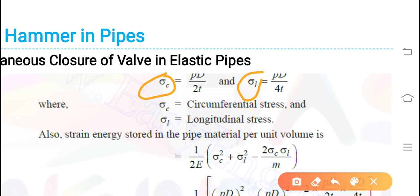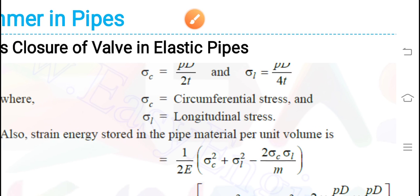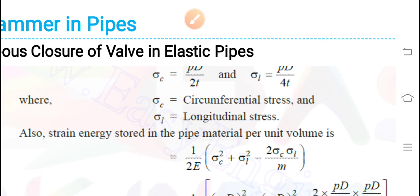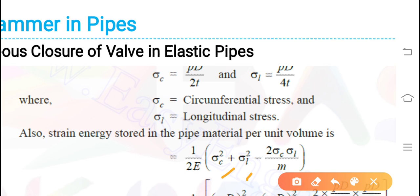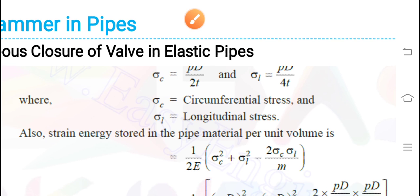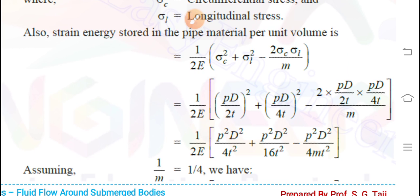The strain energy stored in the pipe material per unit volume is given by (1/2E) multiplied by sigma_c² + sigma_l² minus 2·sigma_c·sigma_l divided by m. Substituting: (1/2E) multiplied by (pD/2t)² plus (pD/4t)², which gives us sigma_c² and sigma_l² respectively.